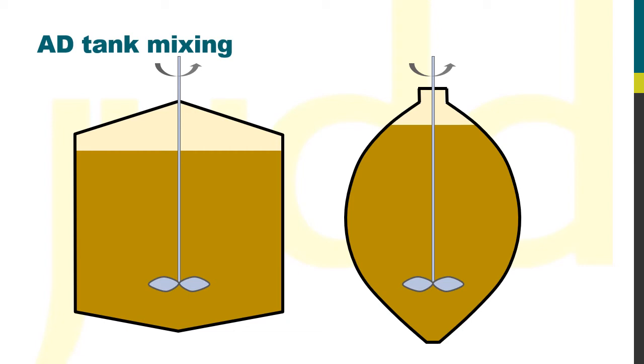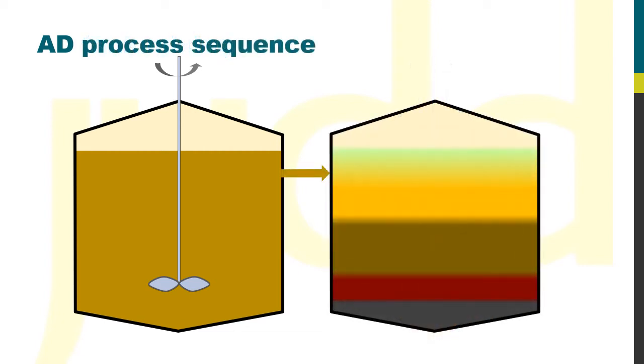The AD process can also have multiple stages. A two-stage system often has a mixed tank followed by an unmixed one.